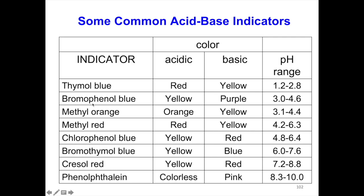Next is bromophenol blue. It is yellow in acidic and purple in basic. The yellow color starts to change to purple at a pH range between 3.0 to 4.6 — so between this range, the yellow starts to change to purple.